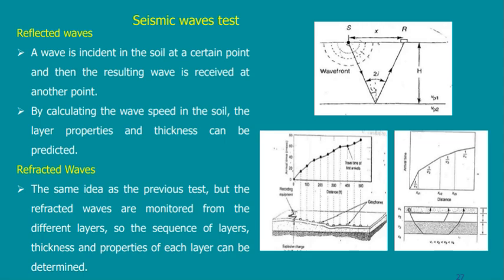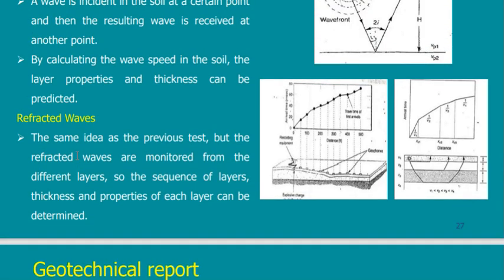There are reflected waves, which bounce back from a layer boundary, and refracted waves, where the angle of the wave changes as it enters a new material — for example, a wave traveling at 60° becomes 75° in the new layer. Based on being reflected or refracted and on wave velocity, experts can determine the properties of the material below.